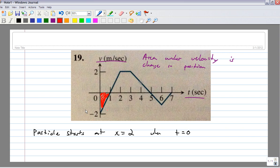The area of that red region there, that's a triangle, it's 1 by 2. So, 1 half base times height gives you an area there of negative 1. So, in the first 1 second, after 1 second passes, the particle will have moved 1 meter to the left.